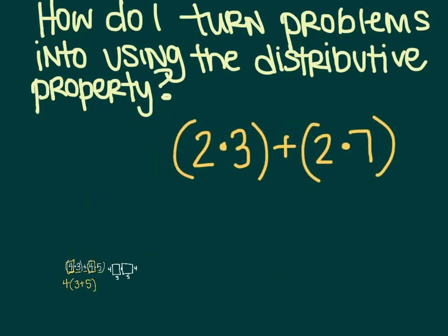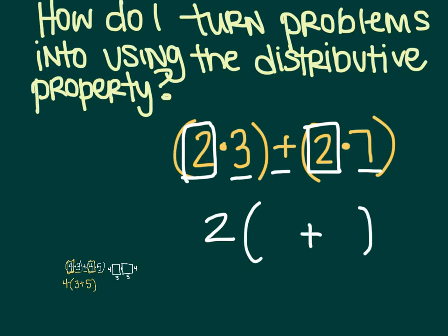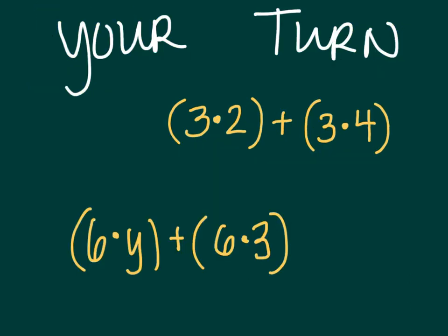Here's another example for you. We have outside the box is the number that's repeated both times, in this case two. Inside the parentheses is everything you didn't use, three plus seven. You could continue on to solve the problem, but we're just practicing here. Your turn. I would like you to write these using the distributive property, just like the two examples that I gave you. Pause the video, and then turn it back on when you're done.